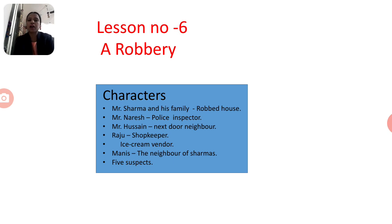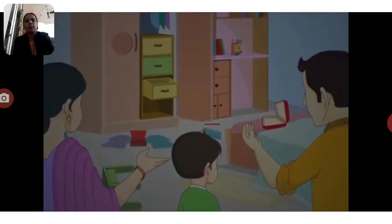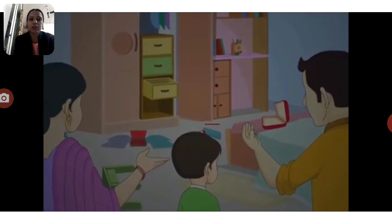The last characters are 5 suspects. The incident took place in Vasanth Colony with a family called the Sharmas. Mr. Sharma and Mrs. Sharma came back after a wedding at around midnight. When they came back, they found their house had been robbed of all the cash and jewelry.